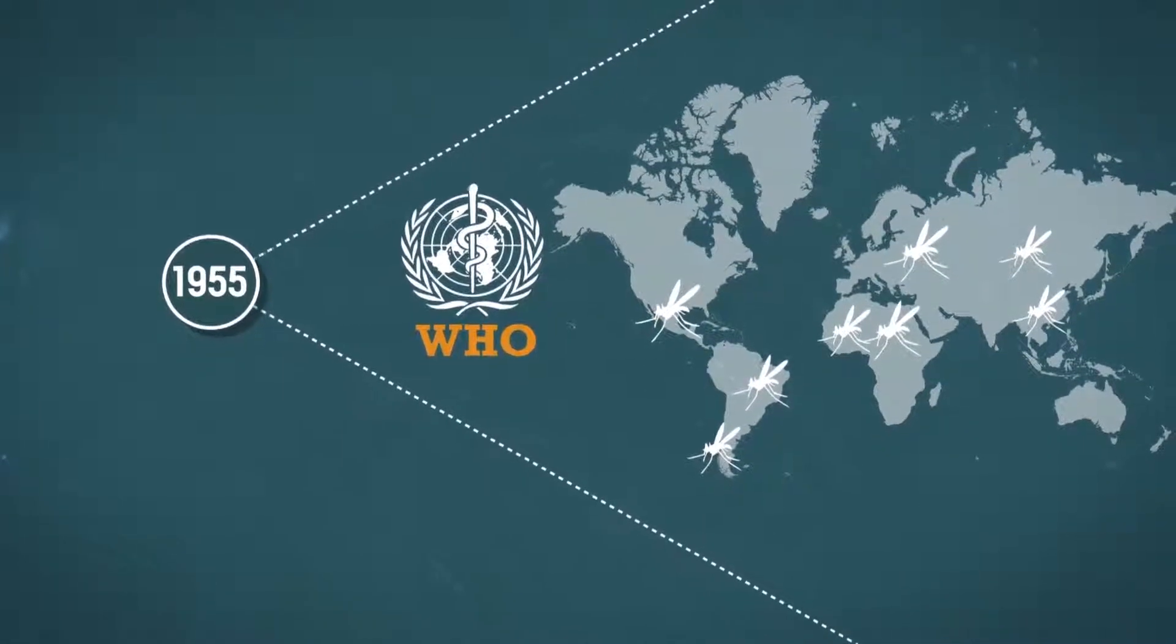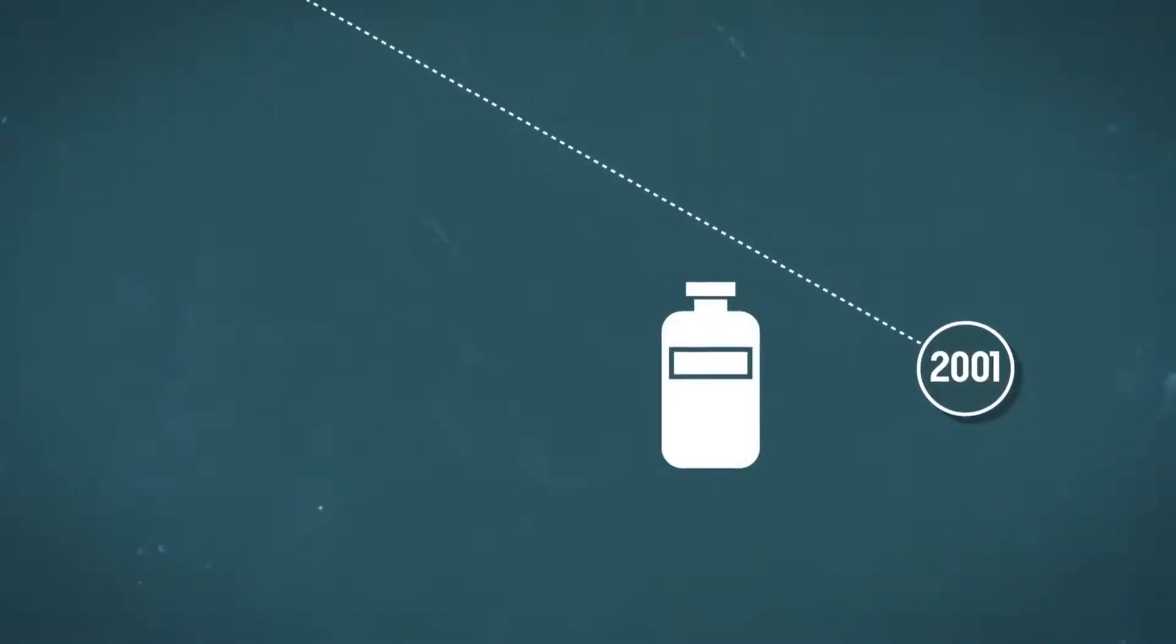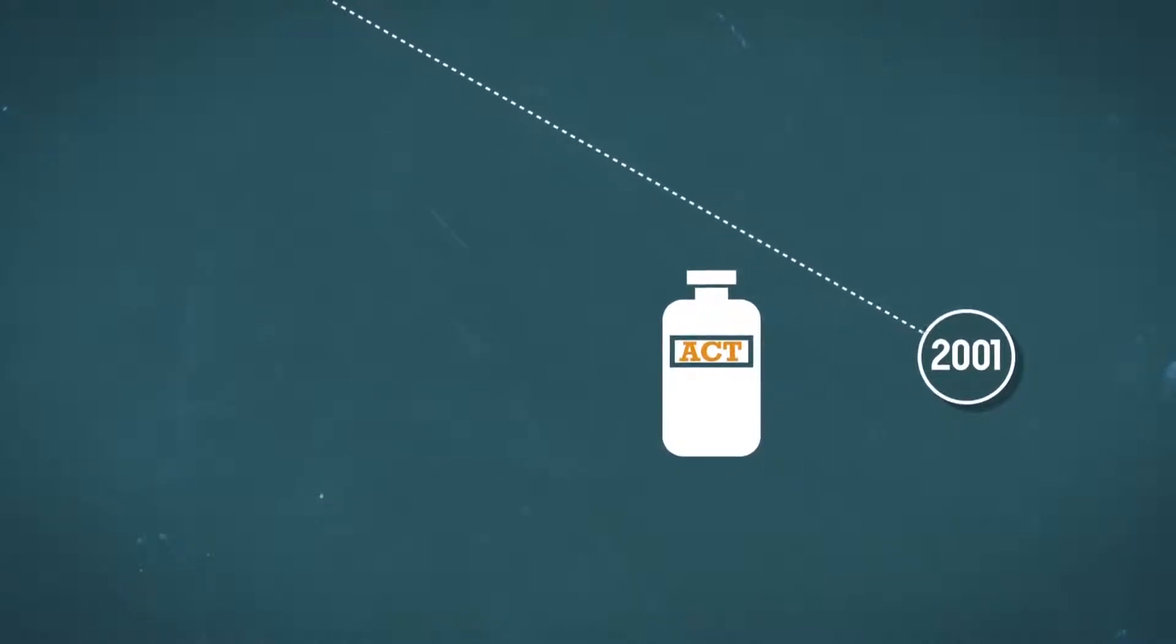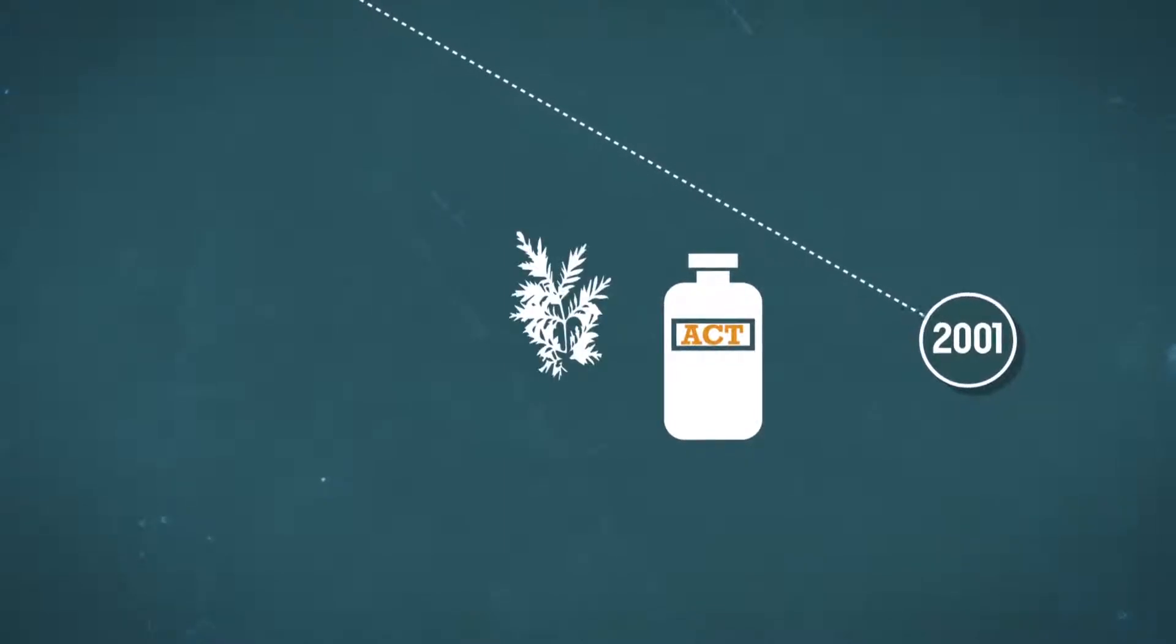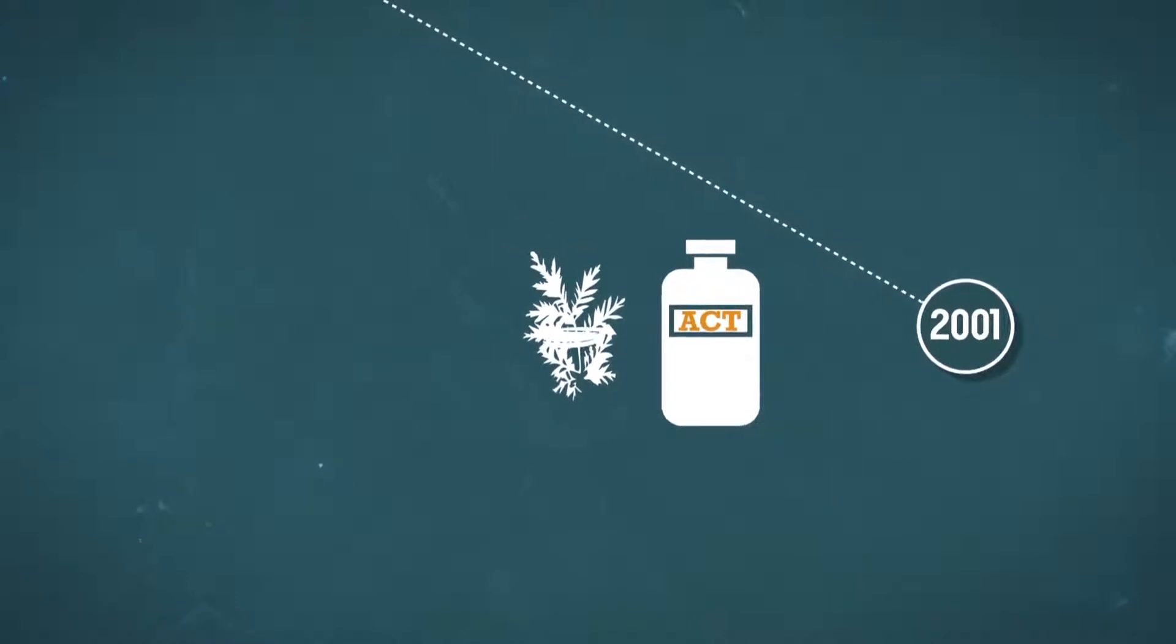But the parasite hit back by becoming increasingly resistant to treatment. In 2001, WHO advocated ACTs, a new treatment that combines artemisinin, a plant derivative already used by the Chinese in the 4th century, with one or two other antimalarials.